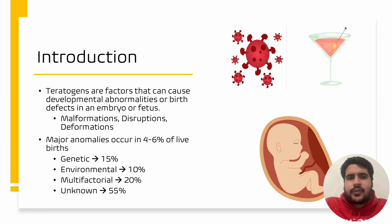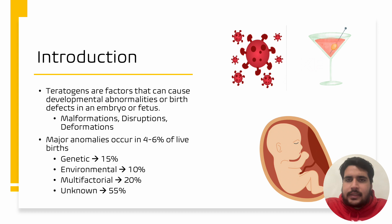Essentially, teratogens are factors that can cause developmental abnormalities or birth defects in a developing embryo or fetus. Specifically, there are three main types of abnormalities. First, we have malformations. Secondly, disruptions. And the third type is deformations.